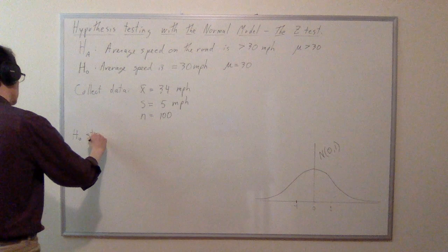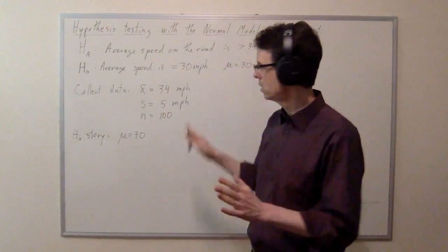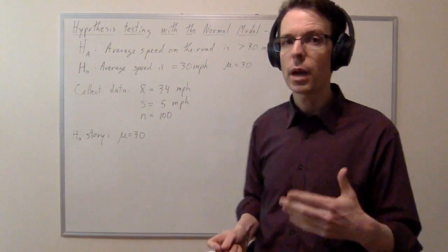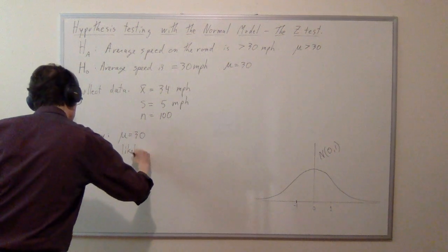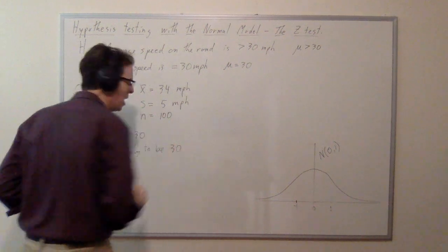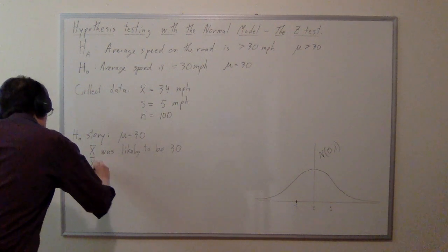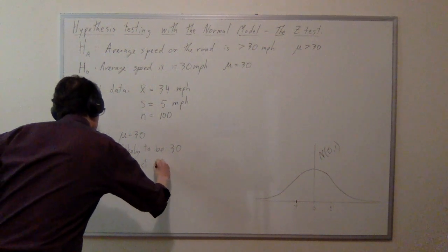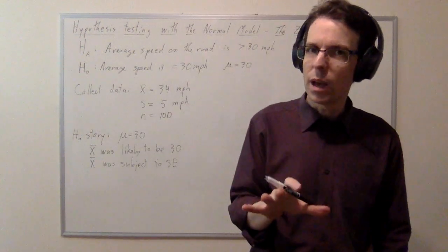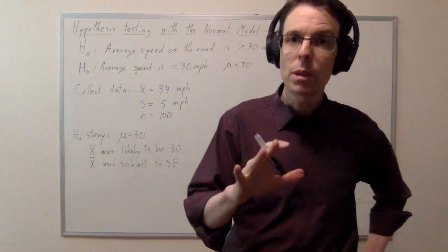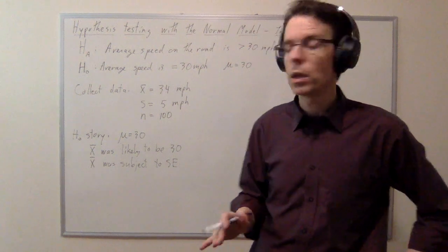The null hypothesis story is: the actual mu is 30. That's the story of the null hypothesis. And so x-bar was likely to be 30 — the most likely outcome was that x-bar would end up at 30. But x-bar was subject to standard error. We can actually calculate what that standard error was in order to predict how much variability x-bar should have exhibited.